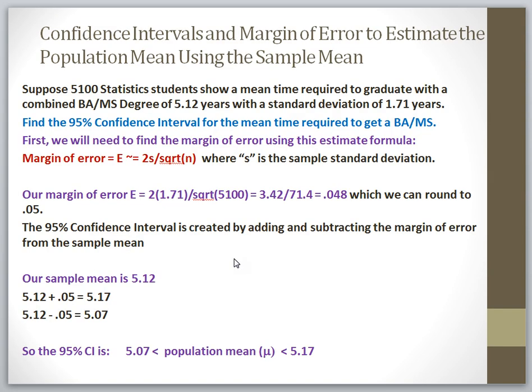All right, now there's a formula to estimate the value of E for a 95% confidence interval for sample means specifically. This is the formula right here. The margin of error E is approximately equal to two times the sample standard deviation divided by the square root of our sample size. And again, S is the sample standard deviation.